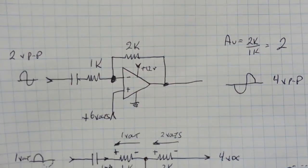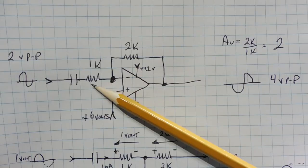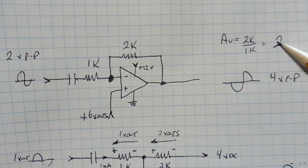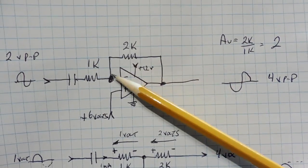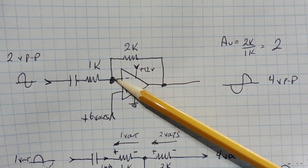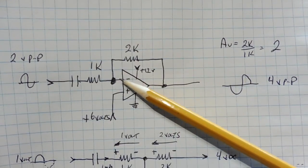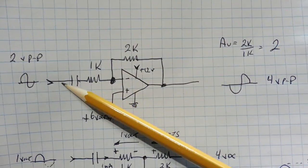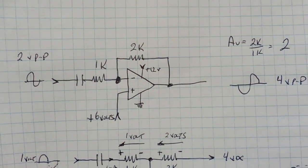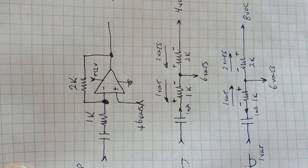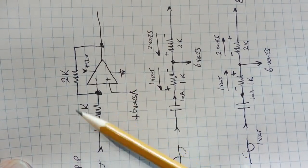Let's analyze this op amp circuit. With a 2K ohm feedback resistor and a 1K ohm input resistor, the gain is 2K divided by 1K equals 2. A 2 volt peak-to-peak input gives a 4 volt peak-to-peak inverted output. The inverting input is called a virtual ground because the op amp keeps it at 6 volts — our reference — and since no current flows in or out of the inputs, the current through both resistors is equal.